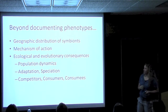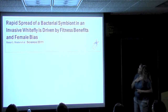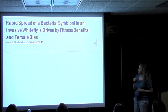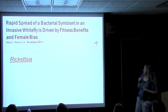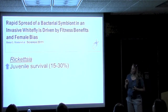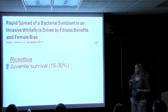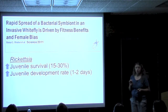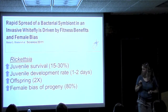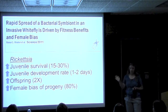Here's one very concrete example — ripped from the headlines from last year. Anna Himler et al. looked at the whitefly Bemisia tabaci, the sweet potato whitefly, one of the worst pests globally. It has, in some instances, the symbiont Rickettsia. What they found was that Rickettsia increased juvenile survival, increased juvenile development rate by one to two days, doubled the number of offspring produced, and those offspring had a greater female sex bias than uninfected whiteflies.